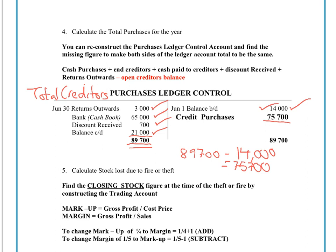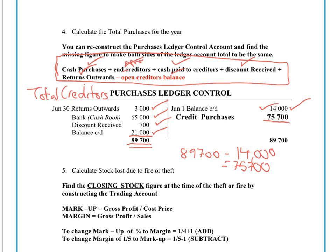It's worth pointing out that some tutors teach this as a formula rather than through the T-account, so that if you have all the other values, you can find the one missing piece of information. Similarly, if you knew the opening creditors balance, you could also find the closing creditors balance, providing you had all the other pieces of information.